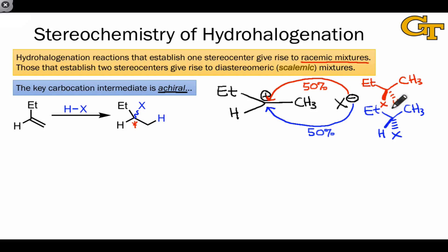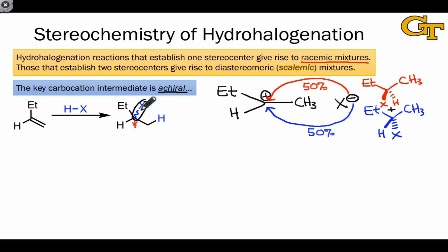To indicate this, we can either draw both enantiomeric products using a plus sign to show that both form, or we can use a wavy bond linked to the stereocenter to show an equal mixture of up and down C–X bonds in the products of this reaction.